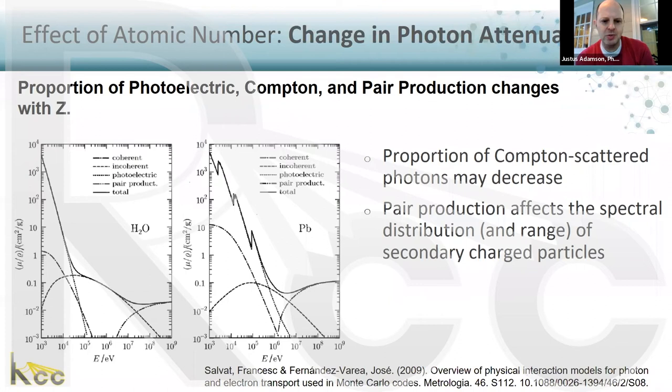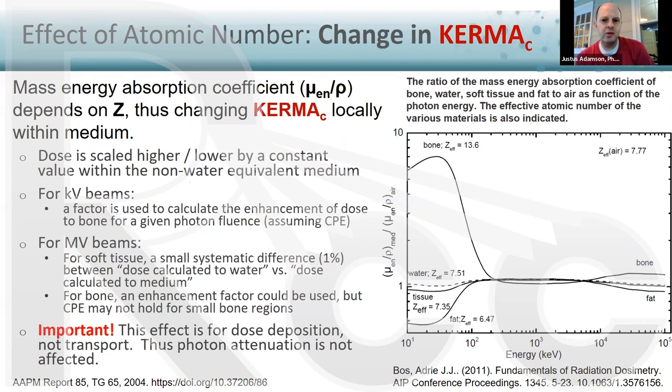For the change in photon attenuation with atomic number: comparing water versus lead, the Compton region shrinks substantially while photoelectric and pair production become much more important for high-Z materials. In a high-Z material, more pair production occurs, which actually affects the spectral distribution and range of the secondary charged particles. This effect is modeled by Type C algorithms but not by Type B.